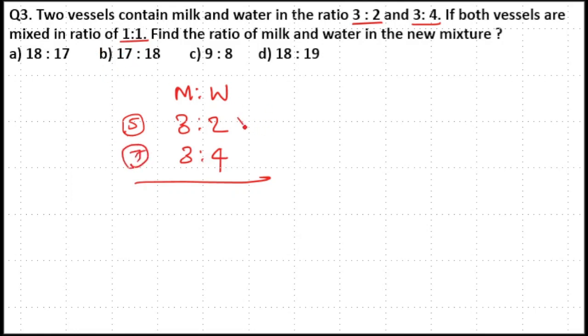Both the vessels are mixed in a ratio 1:1. If you want to add the ratios together the ratio total parts should be equal. Here total parts are not equal.